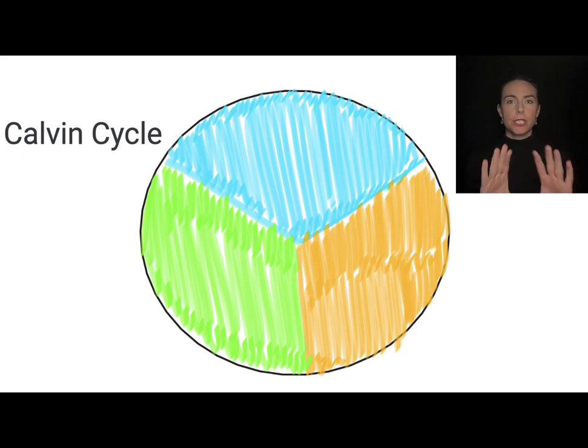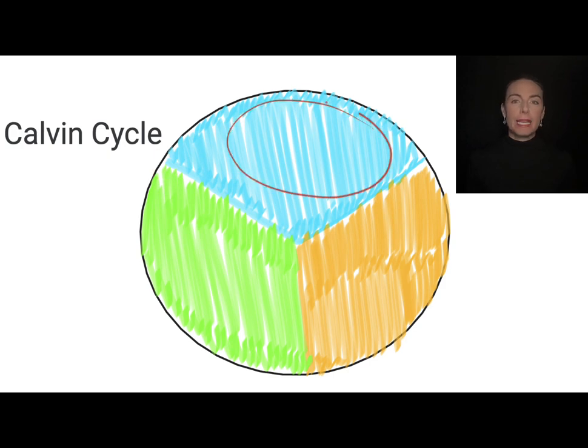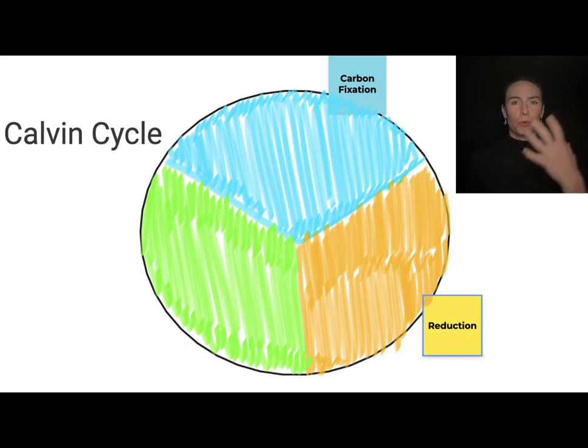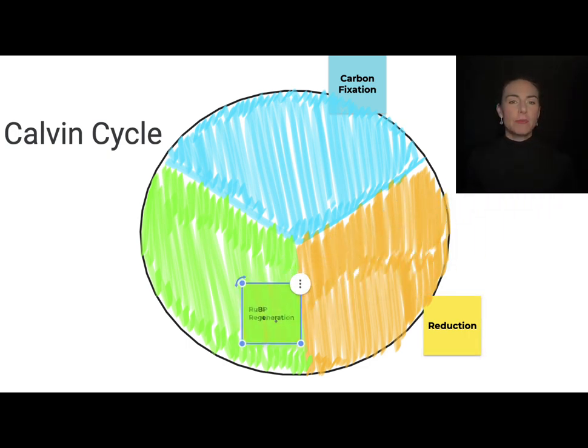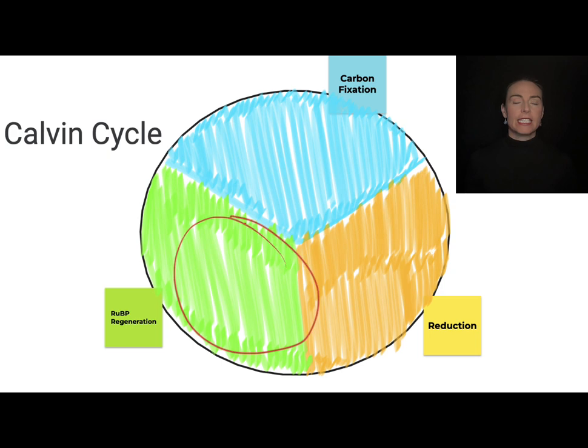Before we get into the details, let's just take a broad view. The Calvin cycle is in fact a cycle, so you're going to hear me talking about it starting and then ending with the same molecule. There are three basic phases to the Calvin cycle. We'll talk about the phase called carbon fixation first, then we're going to go through some reactions that are all revolving around reduction, and then we'll get into the last bit of the cycle that has to do with RuBP regeneration.